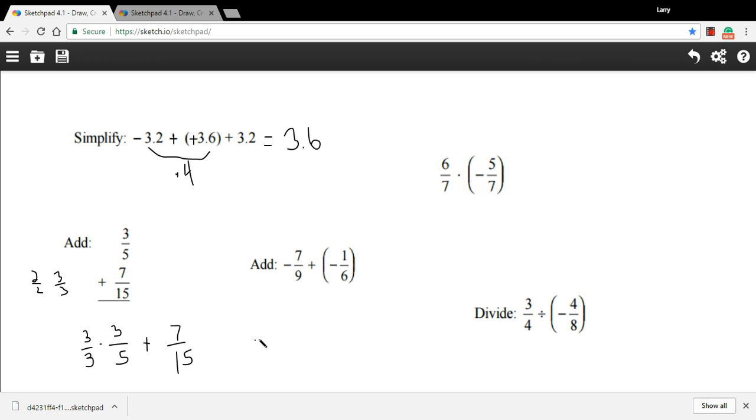On the top, I get 9. On the bottom, 15. So that's 3 thirds times 3 fifths. Now we can add that to our 7 fifteenths, and we get 16 fifteenths. That's good enough if you want the improper fraction, or you could turn that into 1 and 1 fifteenth.